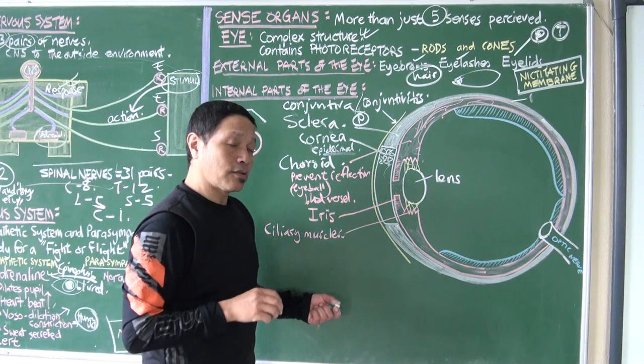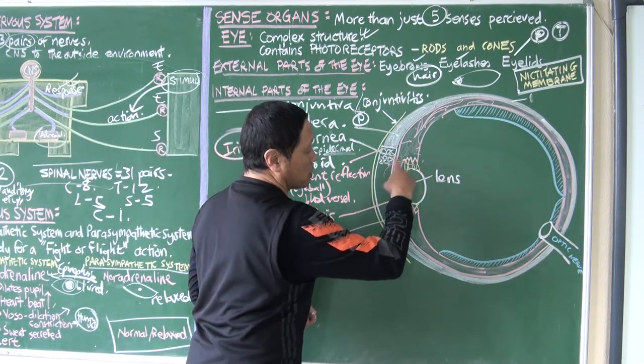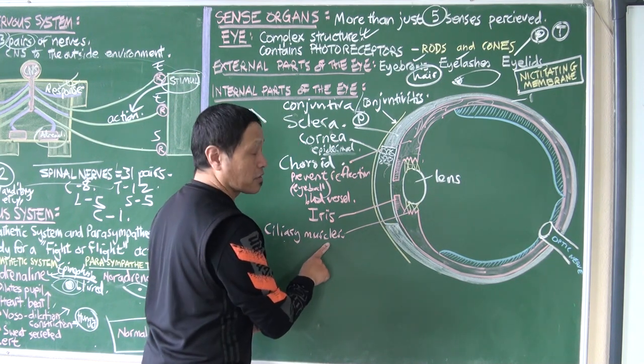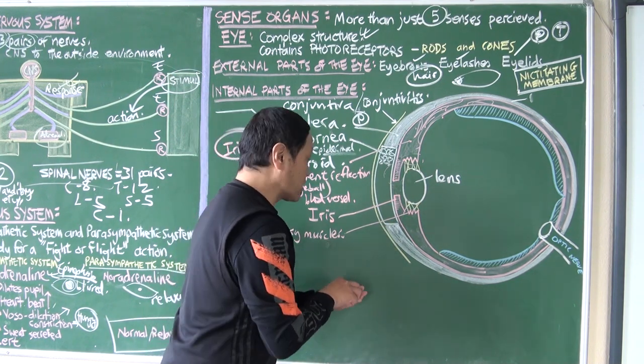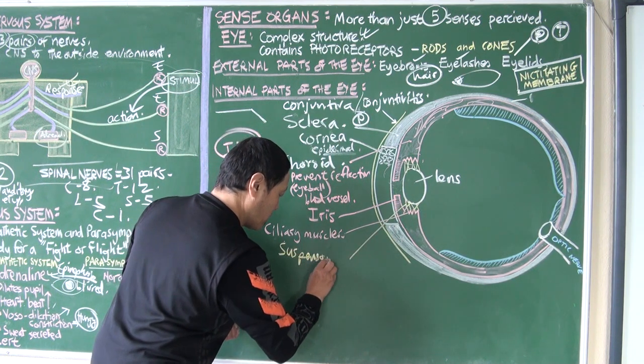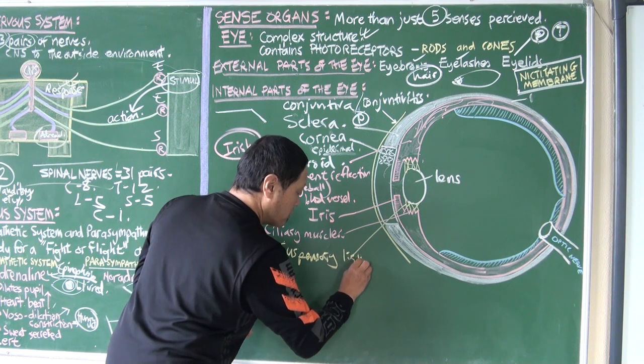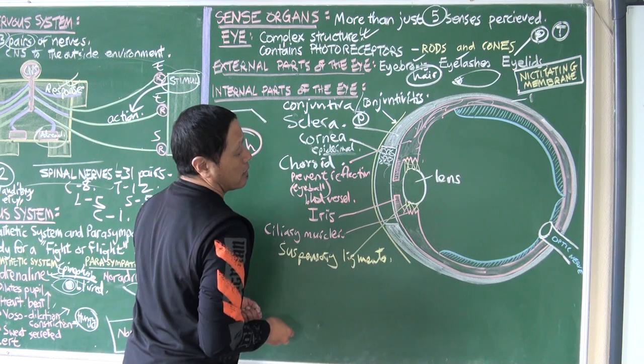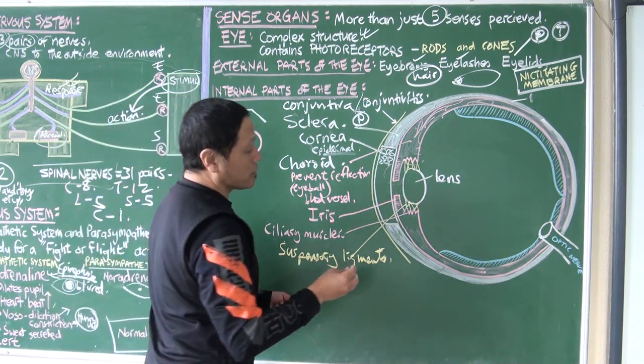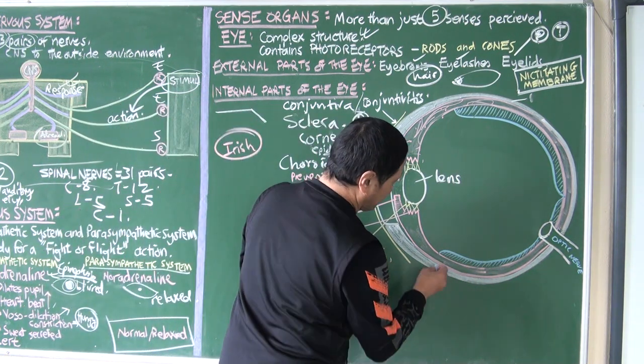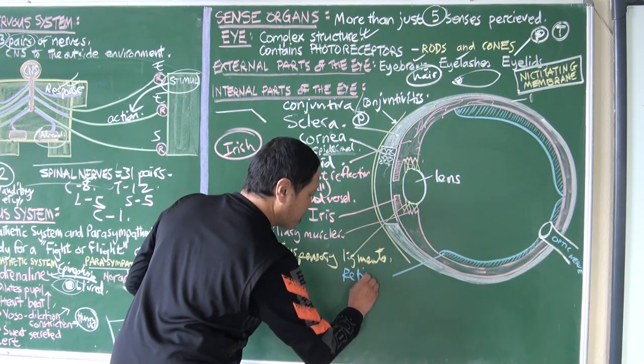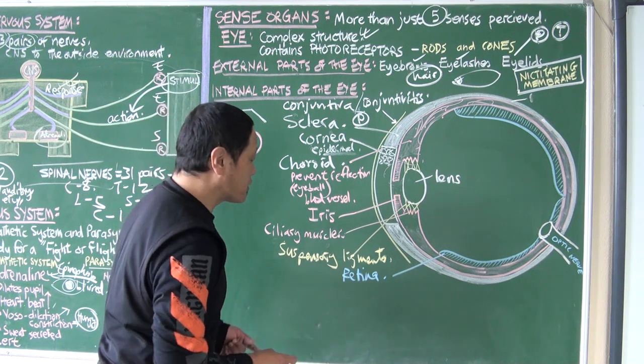The soft ball structure, the shape of which can be changed by contraction of ciliary muscles. And these are the yellow ones that you see here - suspensory ligaments. They connect the ciliary muscles to the lens.